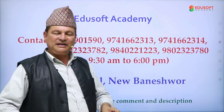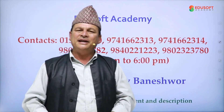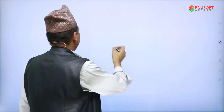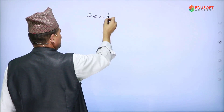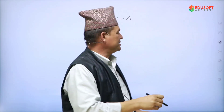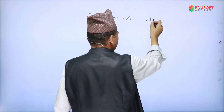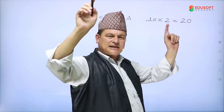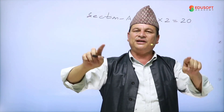I will tell you about the business mathematics model question. The questions will be divided into three sections. Section A has very short answer questions — there will be 10 questions, each carrying two marks, for a total of 20 marks.